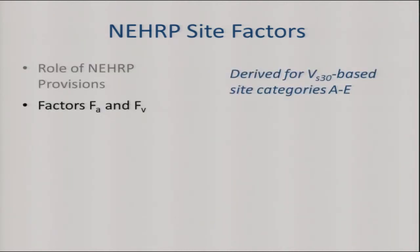The factors F_A and F_V are derived for VS30-based site categories. That was a decision made about 20 years ago: instead of rock and soil, define site categories on the basis of VS30. This has held up well over time for the most part.